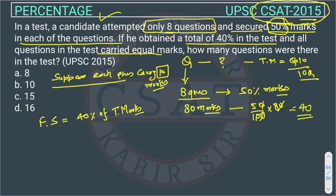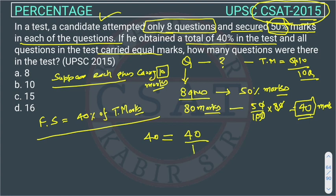50 percent of 80 is 40, so he got 40 marks. Now, the candidate's marks of 40 must equal 40 percent of total marks. Total marks we calculated is 10Q, so: 40 = 40% of 10Q.